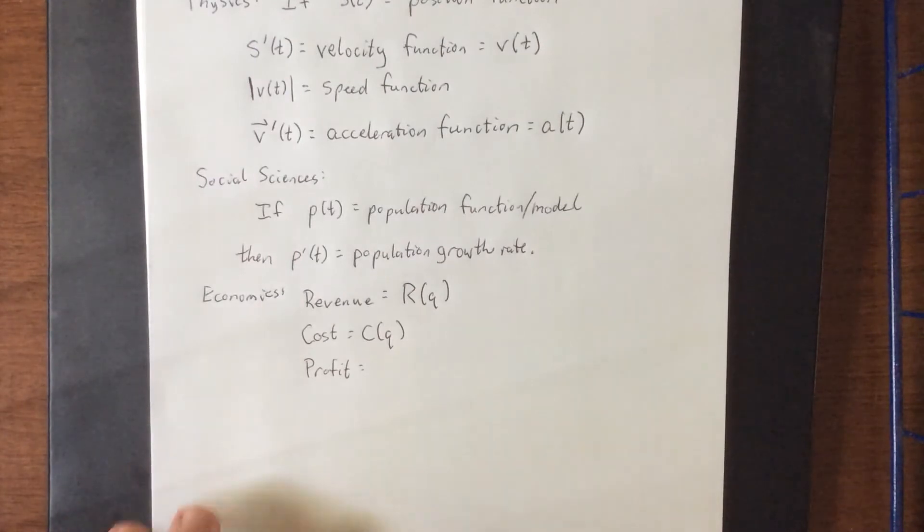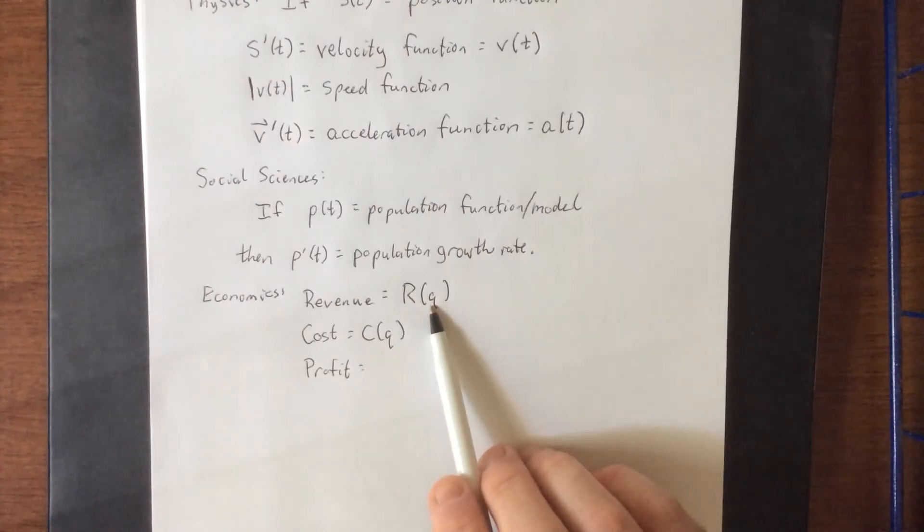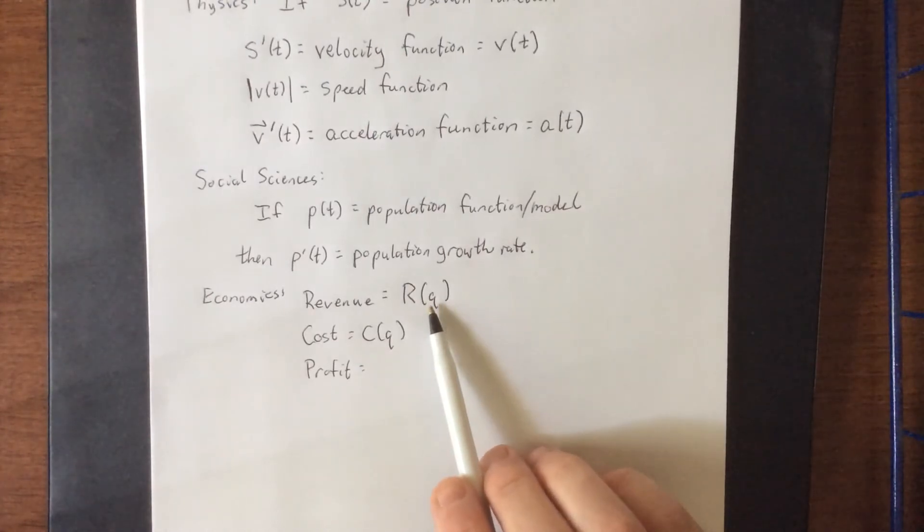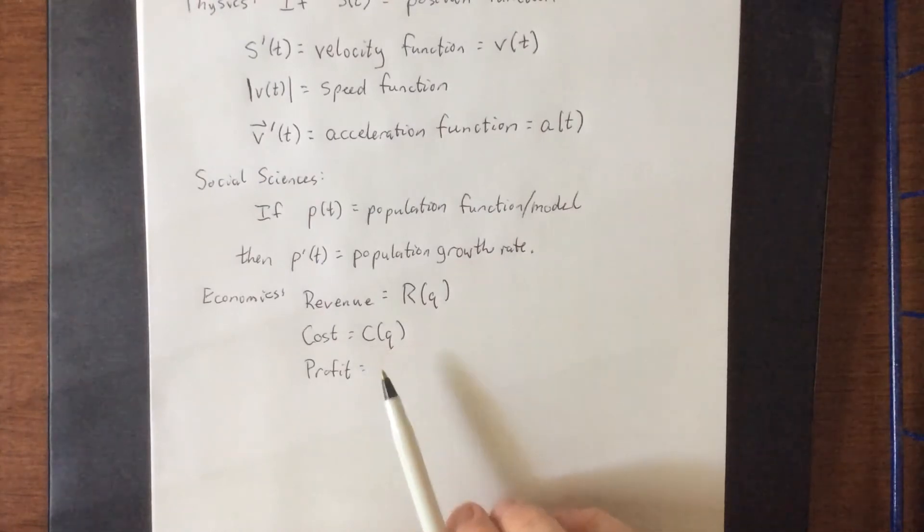Now, for those who haven't taken economics, here is a rough overview of what these things are. So when an object is created to be sold, the amount of money that you sell it for is known as the revenue that comes in from the sale of that product. The cost would be the cost for you, the producer of the object, to actually produce that object.